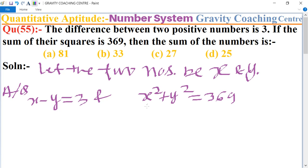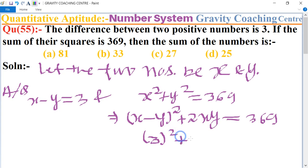Now we use the identity of a squared plus b squared. So its formula is (x minus y) whole squared plus 2xy equals 369. And x minus y is also given, so 3 squared plus 2xy equals 369. And 3 squared equals 9, so 9 plus 2xy equals 369.